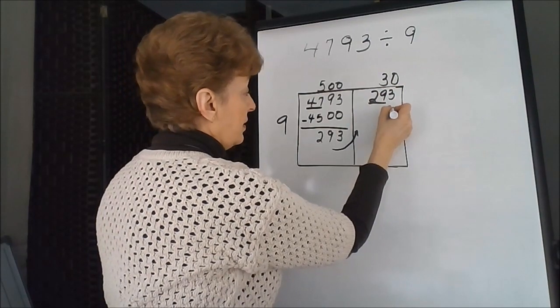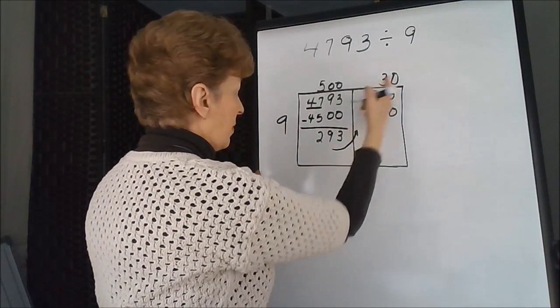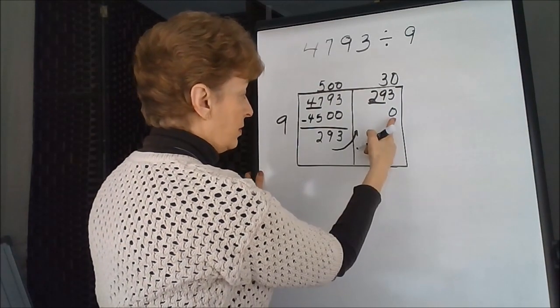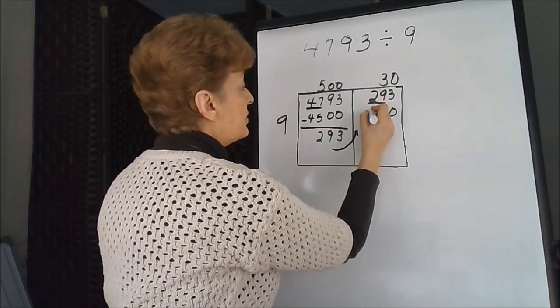The zero comes down, because if we multiply anything times zero, it's zero. 3 times 9 is 27.